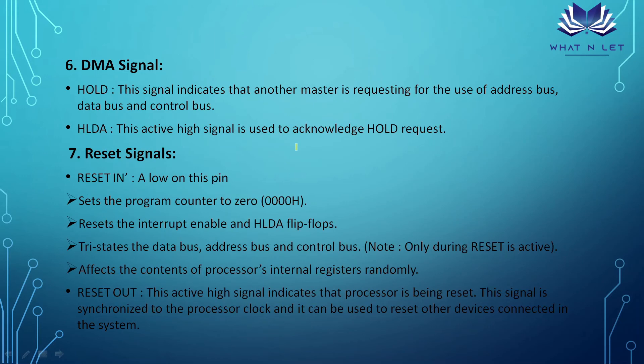DMA — Direct Memory Access. When a peripheral device wants to use the address bus or data bus, the HOLD signal indicates that another master is requesting use of the address, data, or control bus. When the processor grants this, it sends an active high HLDA (Hold Acknowledge) signal.